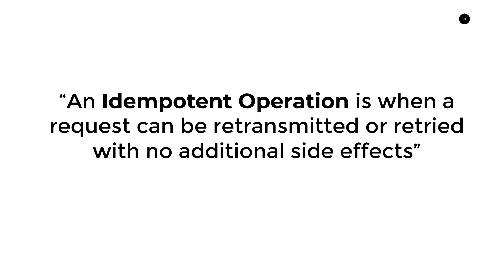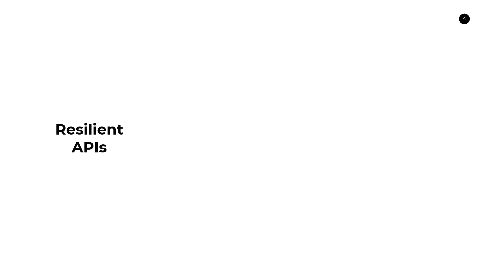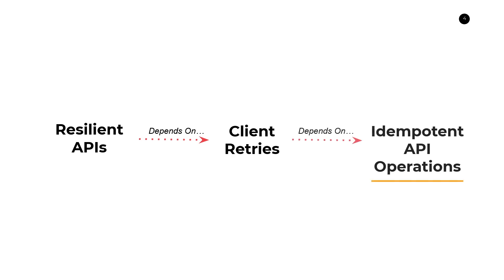So we have this chain of dependency. In order to create resilient APIs, we need to depend on client retries. And in order for client retries to be supported, we depend on idempotent API operations. What do idempotent API operations depend on? Well, the answer is nothing — we can cleverly create our own API operations. Let's talk about how to do that now.